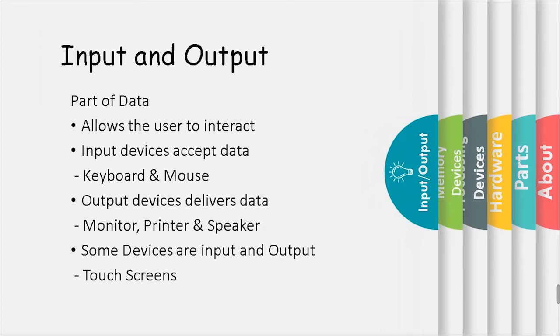Input and output devices allow the user to interact. Input devices accept data — examples include keyboard and mouse. Output devices deliver data — examples include monitor, printer, and speaker. Some devices are both input and output, like touchscreens.